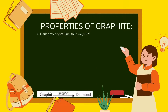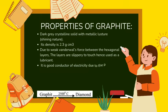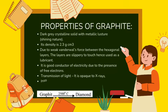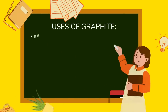Properties of graphite: it is a dark gray crystalline solid with a metallic, shining luster. Its density is 2.3 g/cm³. Due to weak van der Waals forces between the hexagonal layers, the layers are slippery to touch, hence used as a lubricant. It is a good conductor of electricity due to the presence of free electrons. It is opaque to X-rays, insoluble in solvents, and has a melting point above 3500°C.